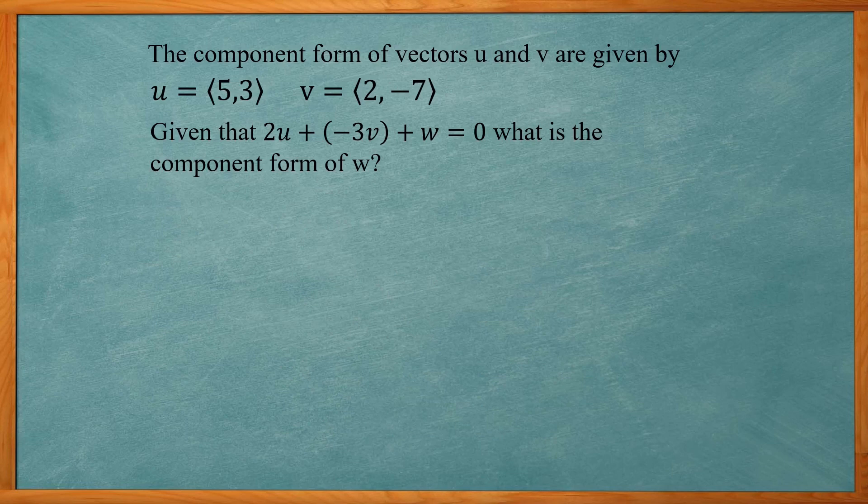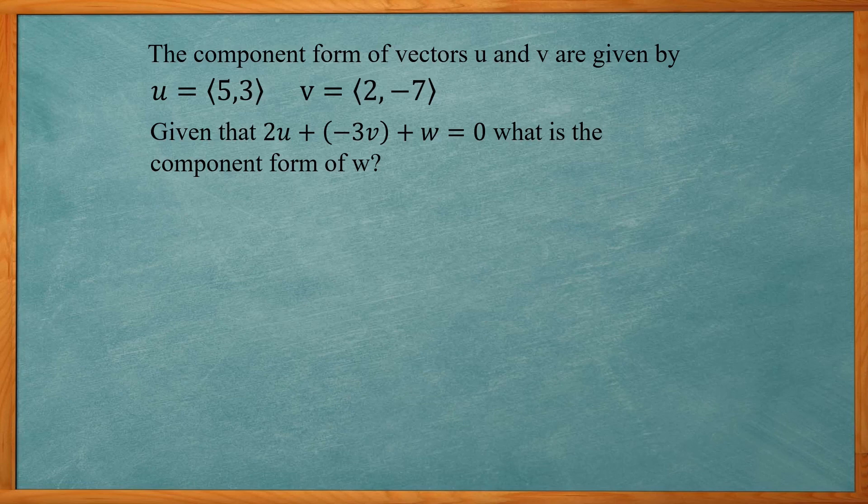So here it reads the component form of vectors U and V are given by (5, 3) and (2, -7). Given that 2U plus negative 3V plus W equals 0, what is component form of W?